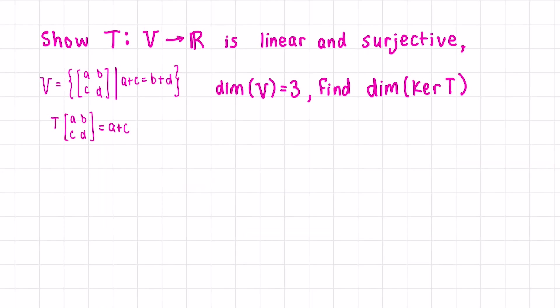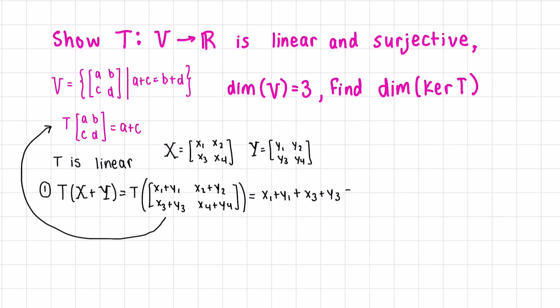Now let's apply our knowledge. First, let's show that this transformation T is linear and surjective. To do this, let's define two matrices. Let's check closedness under addition. Now let's apply our transformation. Since this is just addition, we can change the order of our terms, and clearly this is the same as the transformed version of X plus the transformed version of Y.